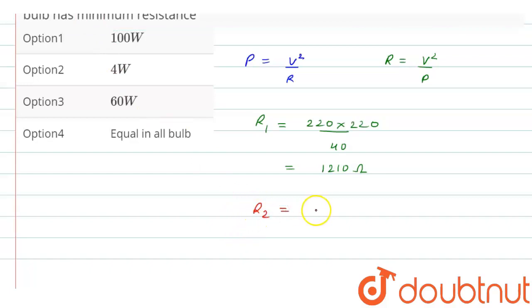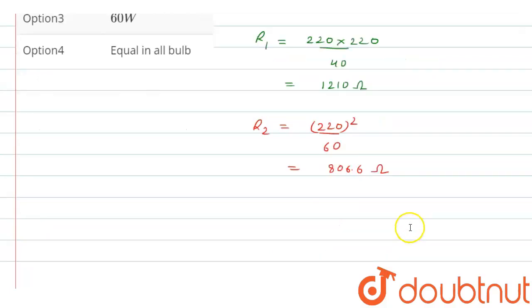R2 is equals to 220 whole square divided by 60, which will be equals to 806.6 ohm.